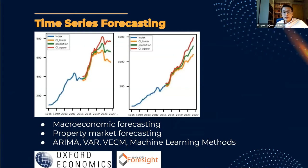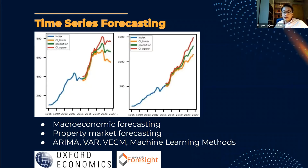Another very popular application is time series forecasting. The traditional methods include ARIMA, Vector Autoregression (VAR), and Vector Error Correction Models (VCM). Now there are also ways to use machine learning methods for these kinds of time series forecasting. One key application many people are familiar with is macroeconomic forecasting — time series such as GDP, inflation, and unemployment that you might input into some kind of deal analysis or general outlook model can be forecast using these methods.